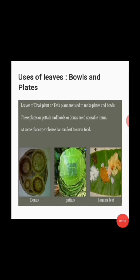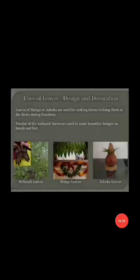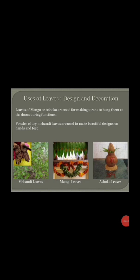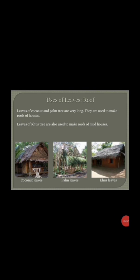We also use leaves to make bowls and plates. You can ask your elders how earlier people used donas, patals, and banana leaves to serve food. Even now, banana leaves are popular in south India for serving food. Leaves are also used to design and decorate houses — for example, mango leaves and Ashoka leaves. In kaccha houses, some leaves are used as a roof. Leaves of coconut and palm trees are very long and are used to make roofs. Leaves of the khas tree are also used to make roofs of mud houses.